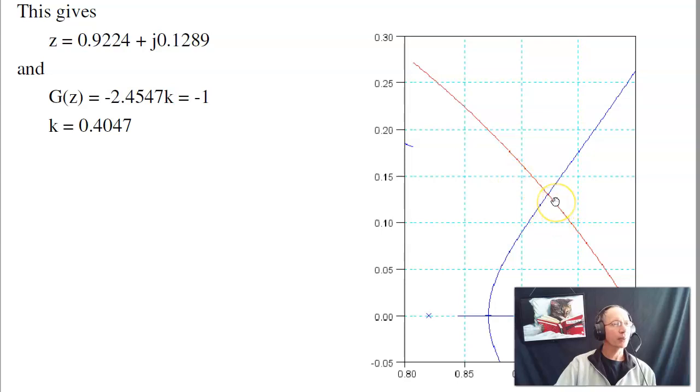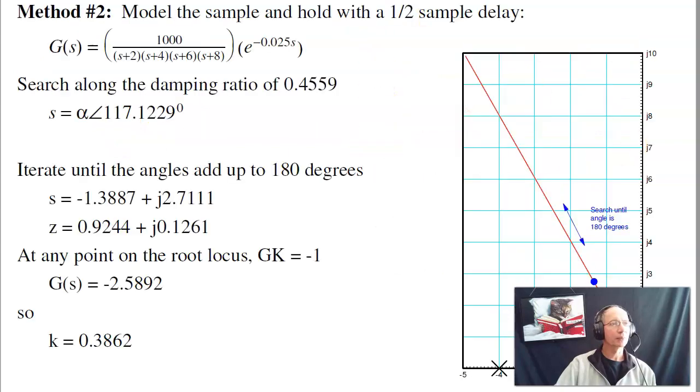And what I care about is this point, where the root locus, the dominant pole, crosses the damping line. That turns out to be right here, at 0.9224 plus j.1289. At any point on the root locus, g times k is minus 1. So analyzing, I get 2.45, meaning k has got to be 0.4047.